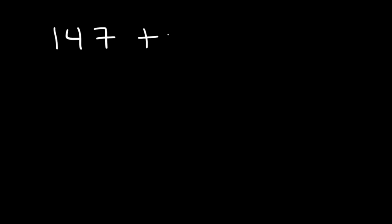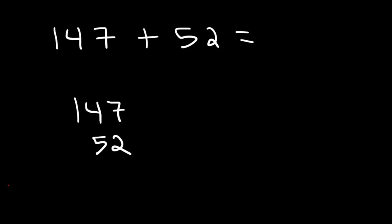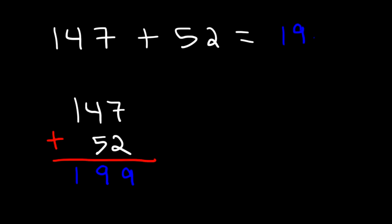Try this one: 147 plus 52. First, rewrite it lined up. 7 plus 2 is 9, 4 plus 5 is 9, and since there's no number in the hundreds place for 52, treat it as 0. 1 plus 0 is 1. So 147 plus 52 is 199.